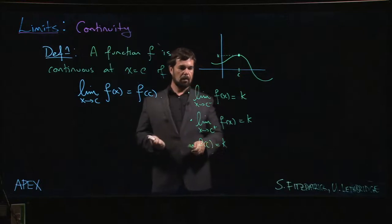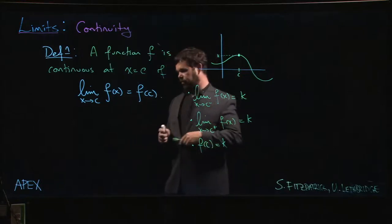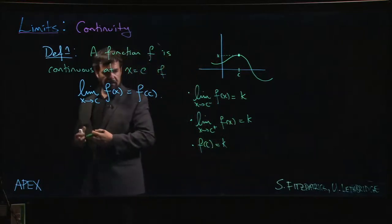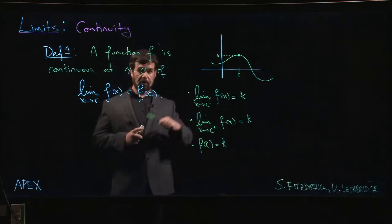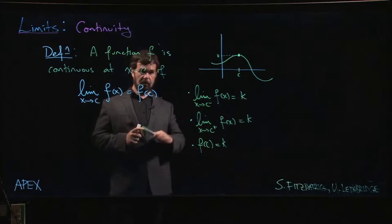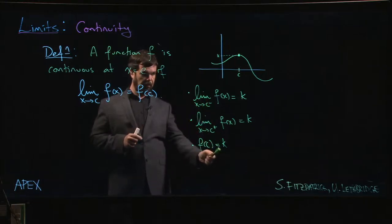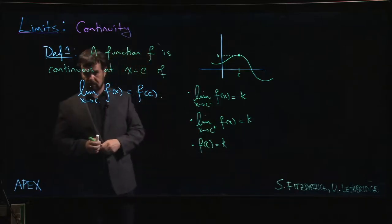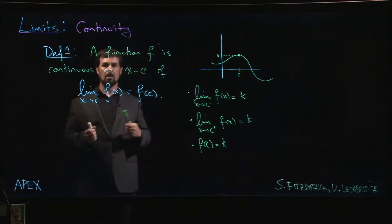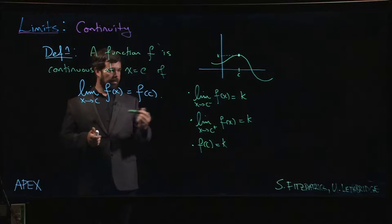If that hole is plugged, then you have a continuous function. So f of c has to have that same value. There's actually several things to check here, depending on the function. Especially if you've got a piecewise defined function, you're going to have to check the left-hand limit, check the right-hand limit, make sure those are the same, check the value of the function, make sure that's the same too. All this stuff has to agree before you can say that a function is continuous.